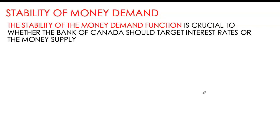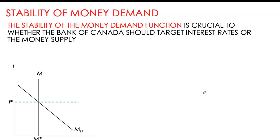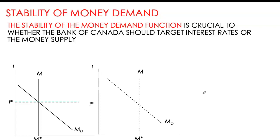Whether we work with a stable or unstable money demand function determines what policy instrument the central bank uses. If the money demand curve is stable and the central bank can accurately control money supply, either instrument works. However, in practice, the money demand curve is highly unstable, and it is very difficult to control larger monetary aggregates like M2 and M2+ due to financial innovation. With an unstable money demand function, holding the monetary aggregate constant causes huge fluctuations in nominal interest rates.